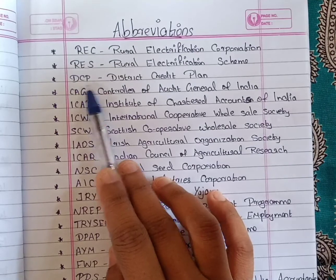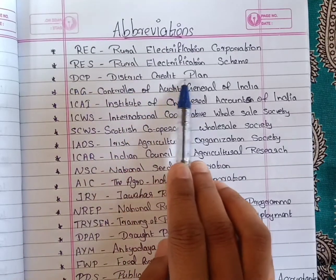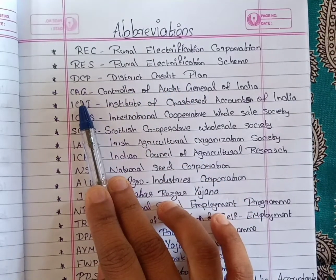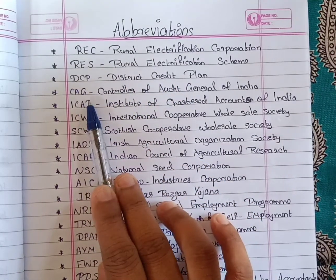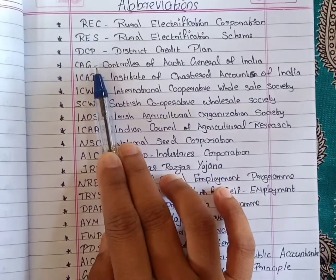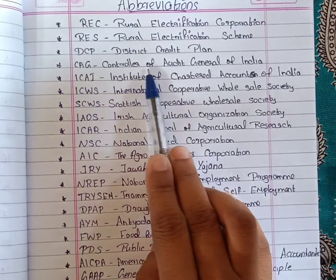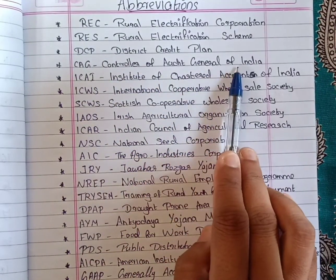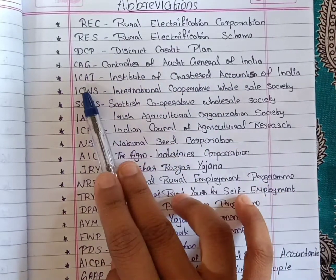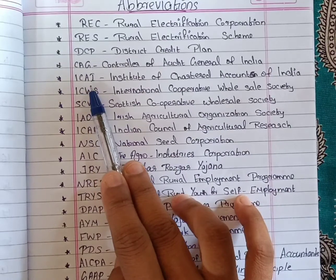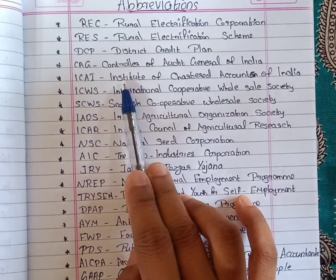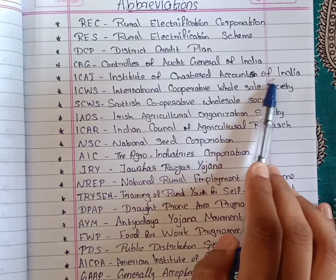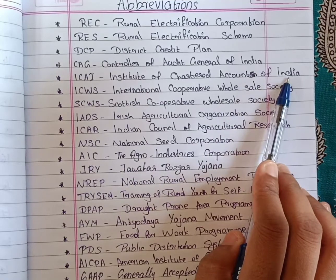Next, DCP — District Credit Plan. Next, CAG — Controller and Auditor General of India. Next, ICAI — Institute of Chartered Accountants of India.